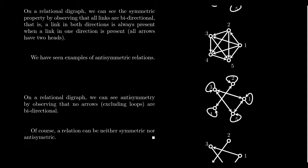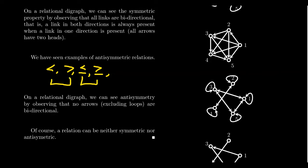For anti-symmetry: whenever you have a double-headed arrow (a relationship going in both directions), it must actually be a loop — meaning equality is the only way you can be symmetric. Examples of anti-symmetric relations include less than, greater than, less than or equal to, and greater than or equal to. Anti-symmetry doesn't require reflexivity — it just says that if symmetry occurs, it only happens via equality. There is never a case where A < B and B < A simultaneously.